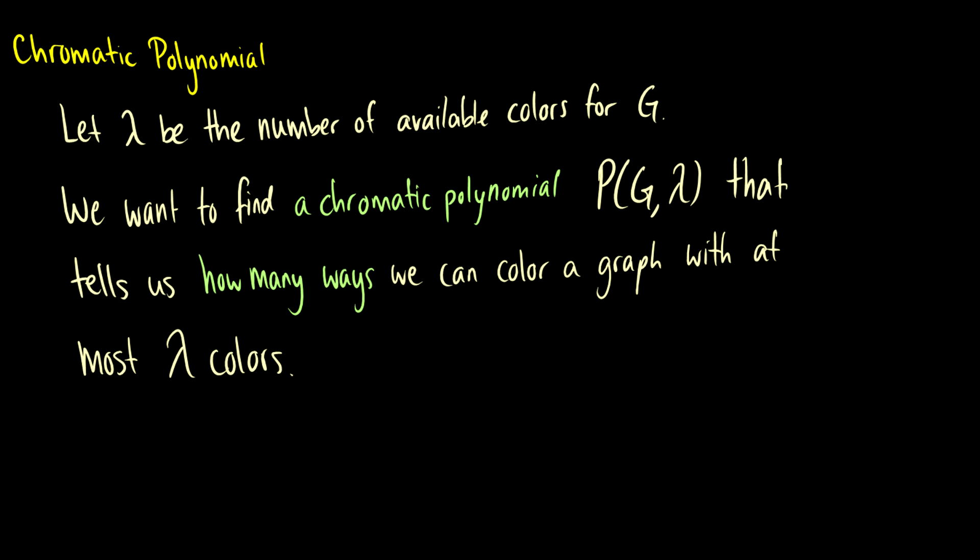So that's the chromatic number. But for counting the number of ways to color graphs — since counting is a big deal in discrete mathematics — we introduce the concept of a chromatic polynomial. The chromatic polynomial tells us how many ways we can color a graph with at most lambda colors. It takes a graph and a color argument; we use lambda as the color variable.